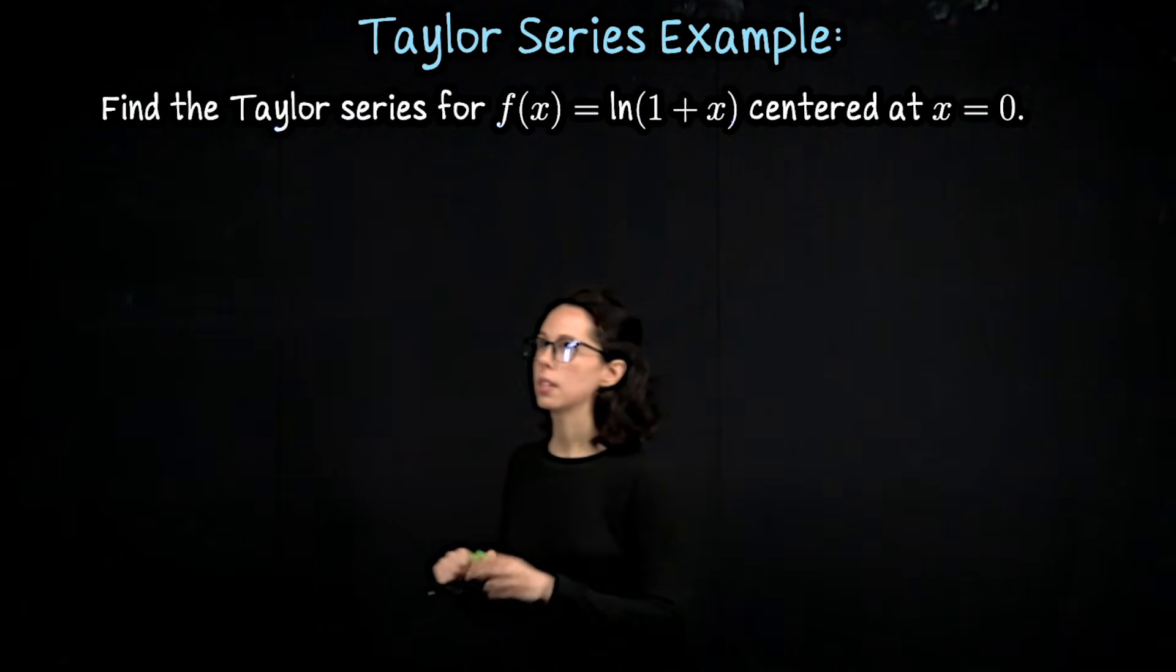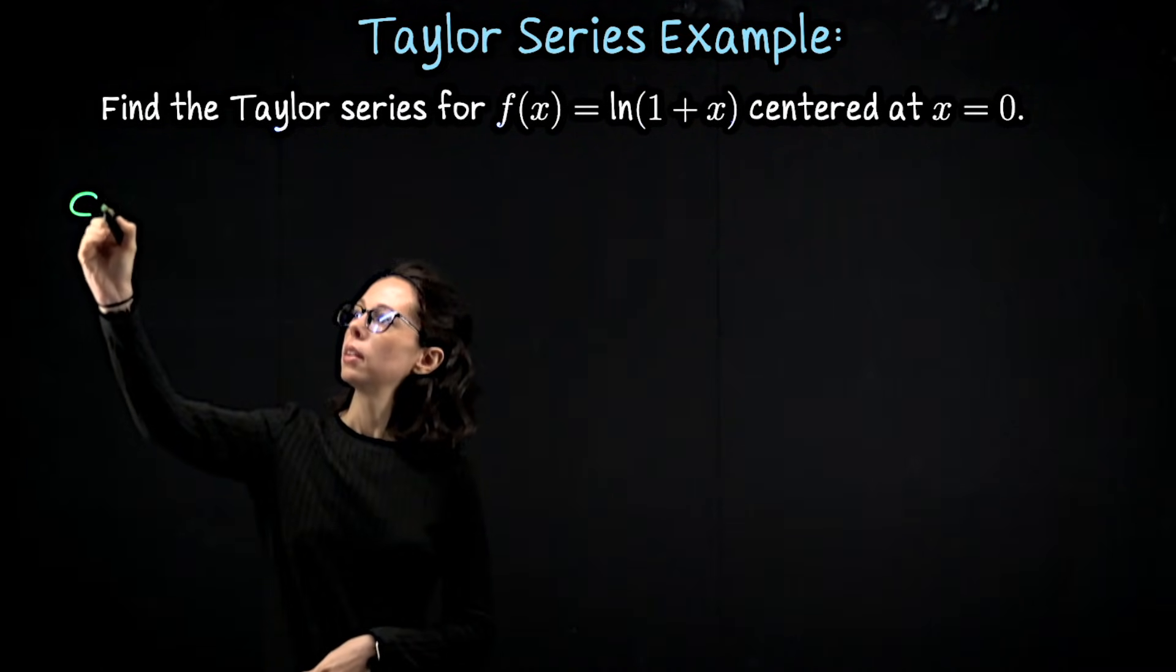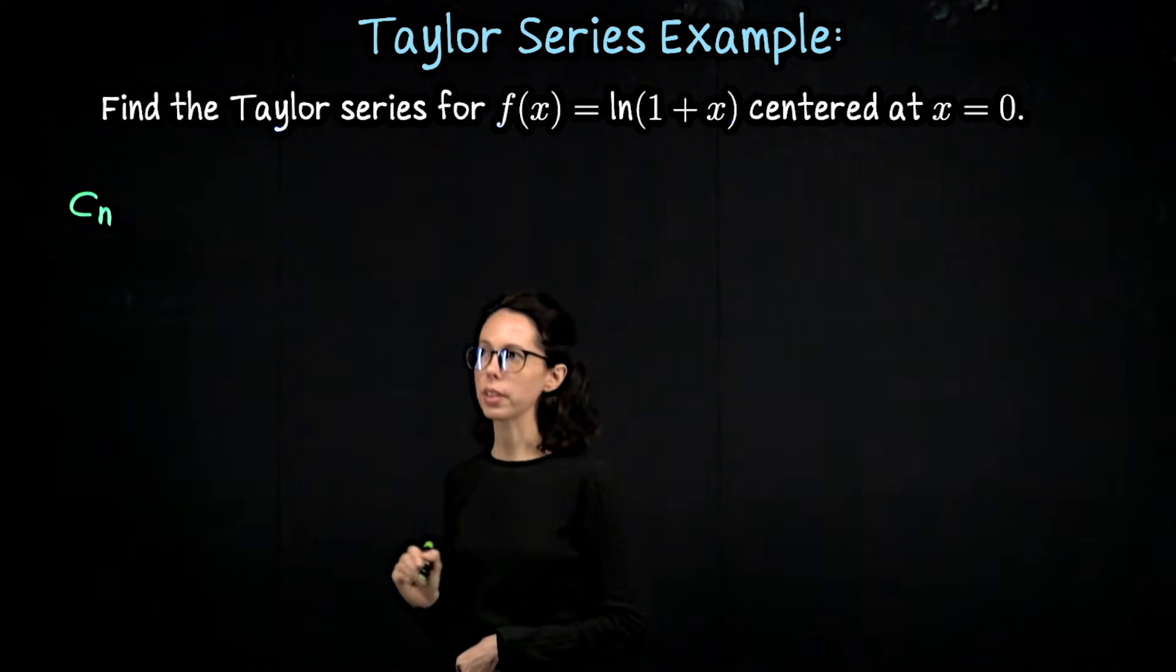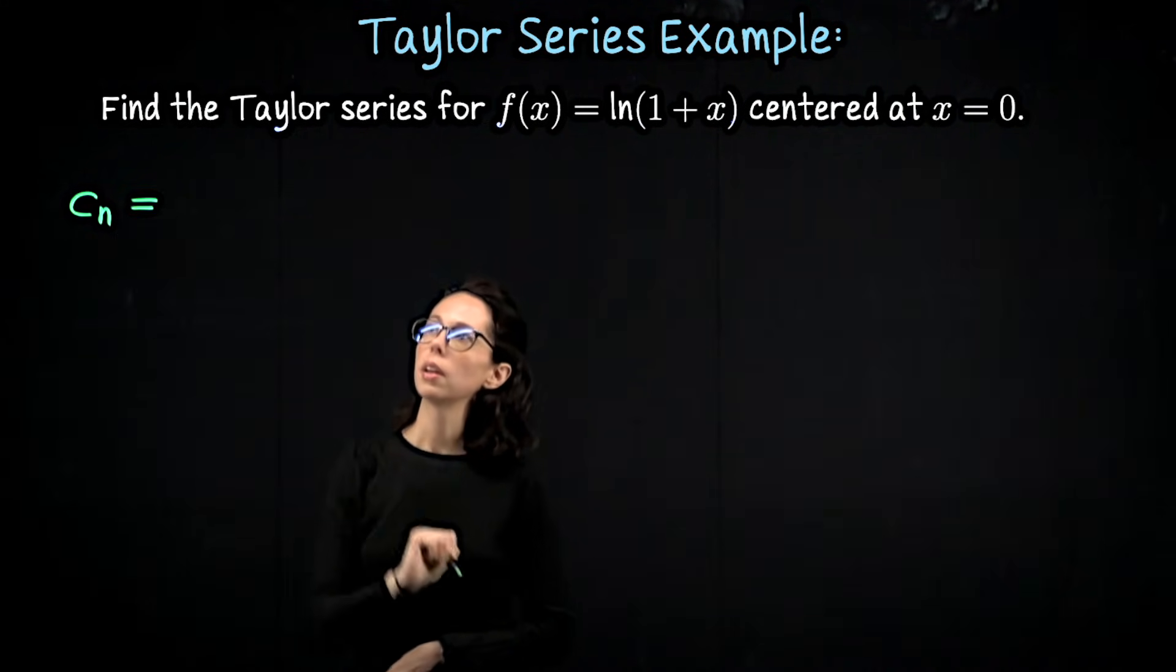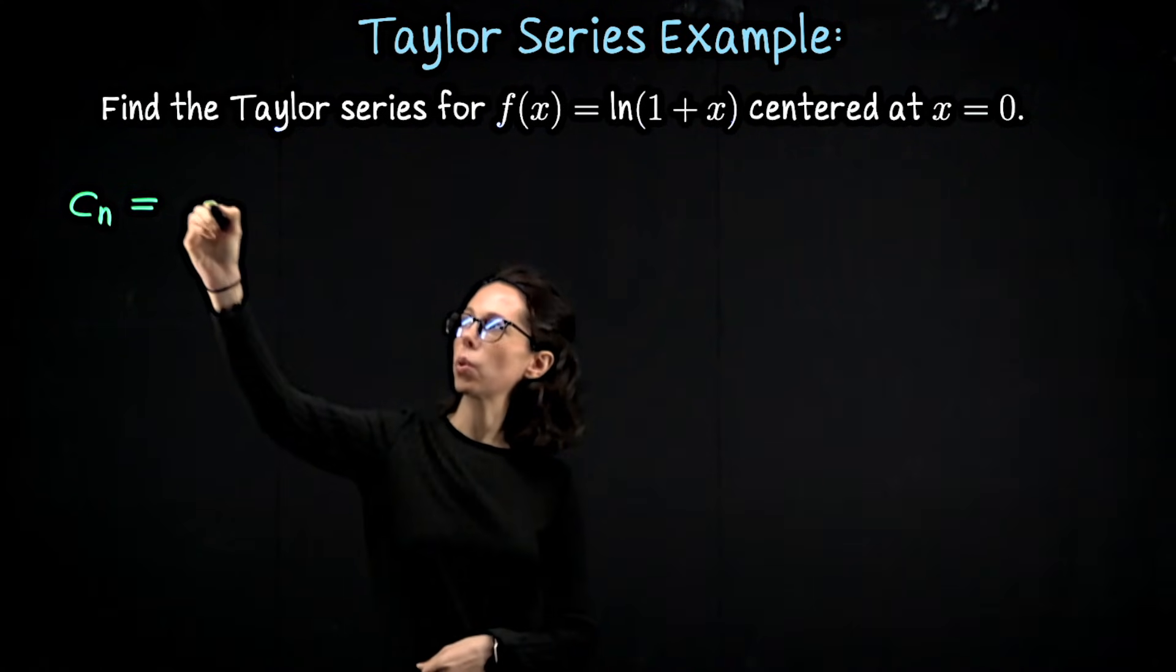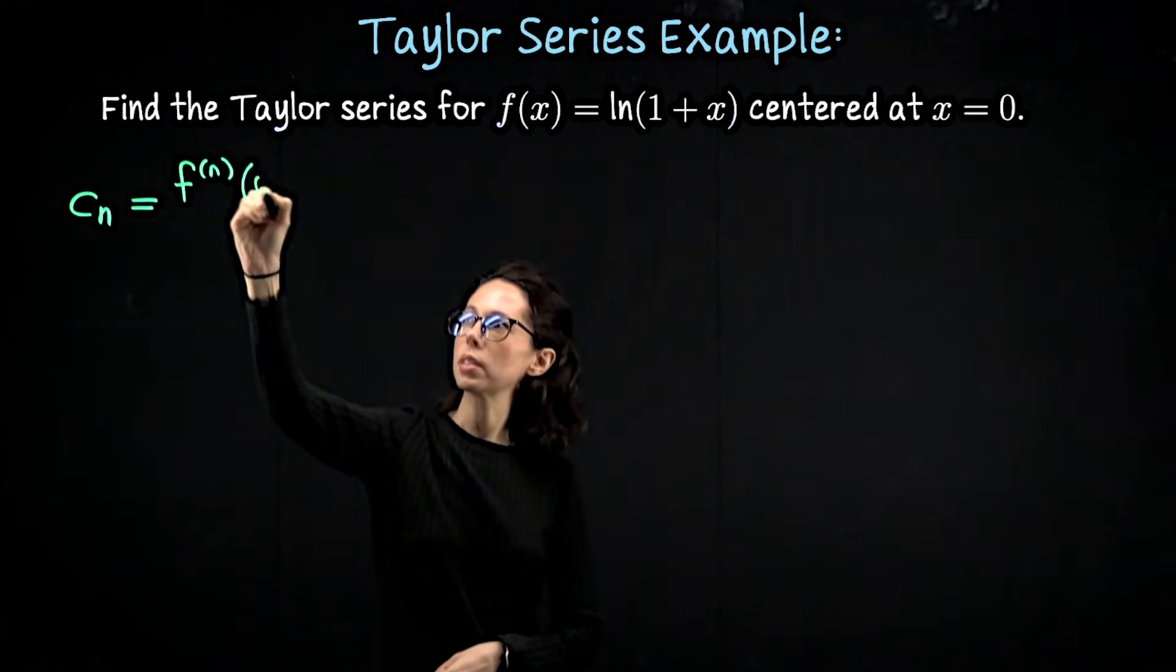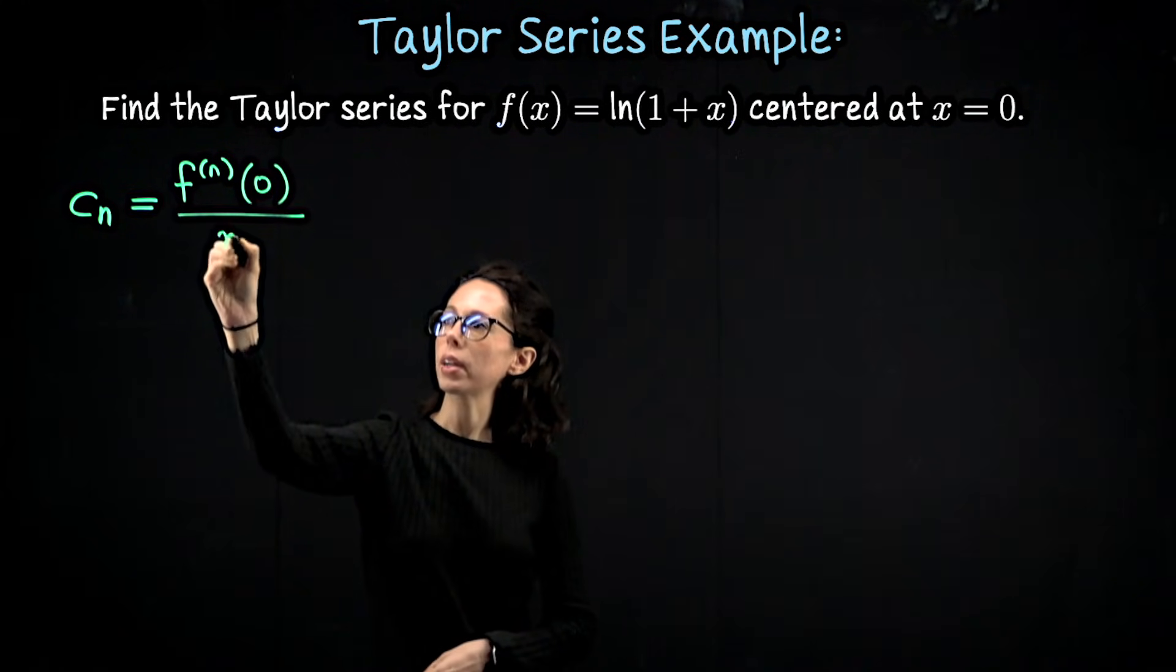So what are those coefficients? The coefficient c sub n for our power series expansion for this function, written as a Taylor coefficient, is going to be the nth derivative of the function evaluated at the center x equals 0, divided by n factorial.